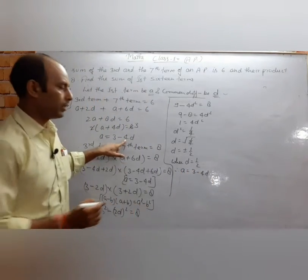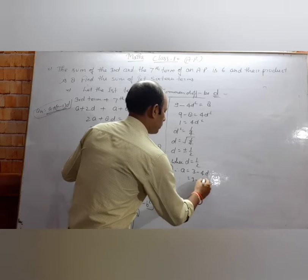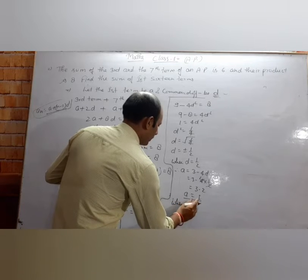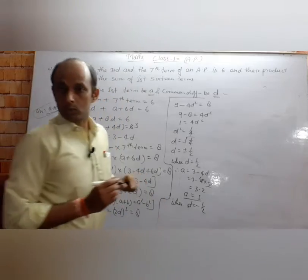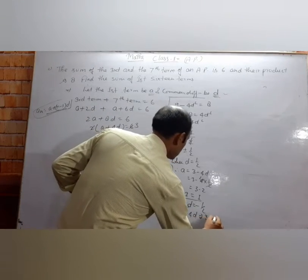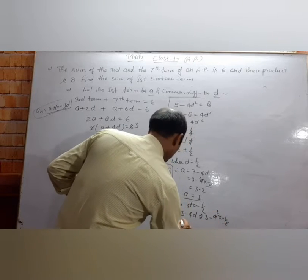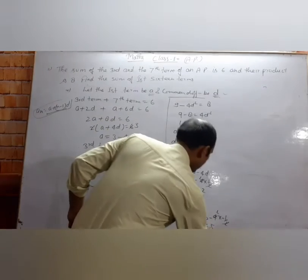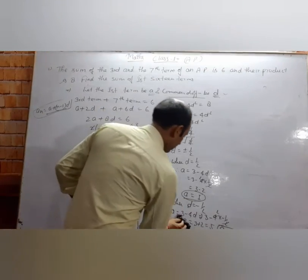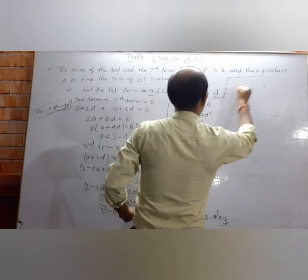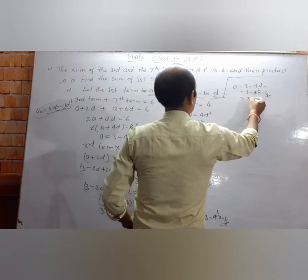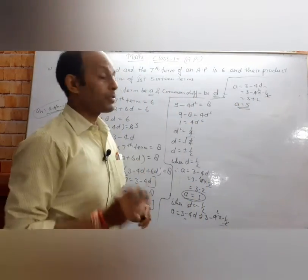When d equals 1/2, a equals 3 minus 4 into 1/2, which is 3 minus 2, so a equals 1. When d equals minus 1/2, a equals 3 minus 4 into minus 1/2, which is 3 plus 2, so a equals 5. In the exam, you should show both values of a clearly.